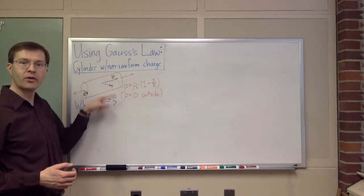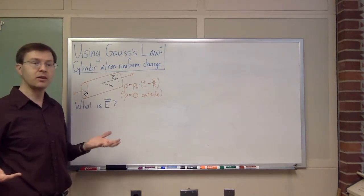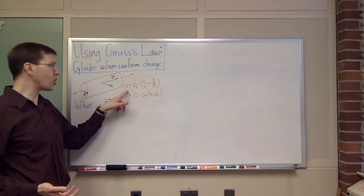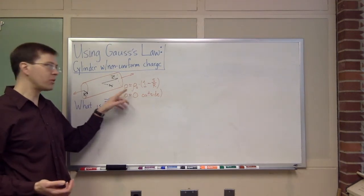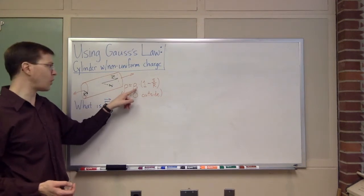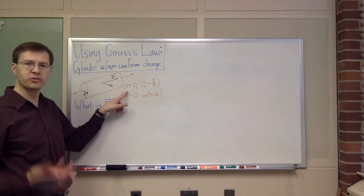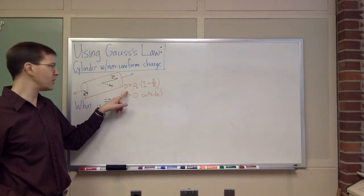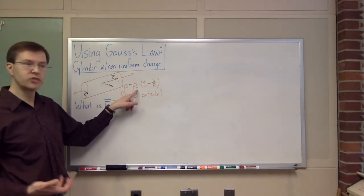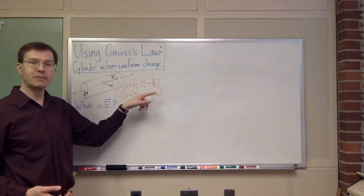Phi would be the coordinate around the cylinder, but phi won't be important here because the charge density is given by this formula. It's rho-naught — some constant — times (1 minus s over r). The Greek letter rho is traditionally used for charge density. Rho-naught is some reference density, a constant, times (1 minus s over r).